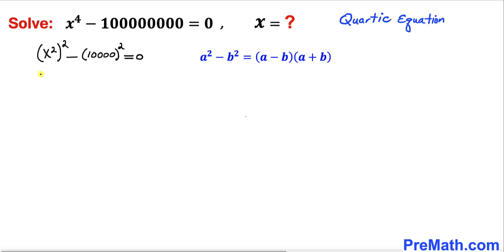So therefore this equation could be written as (x^2 - 10,000) times (x^2 + 10,000) equals to 0.